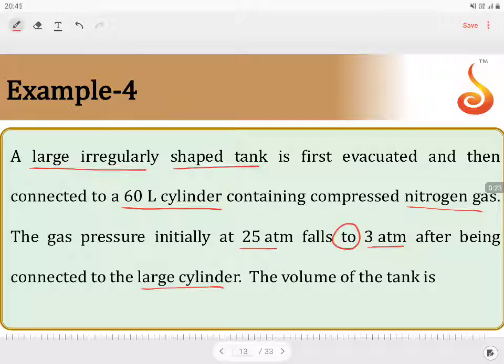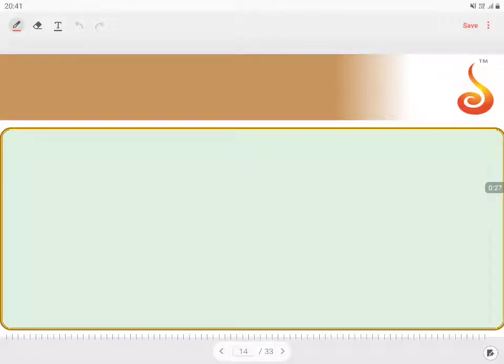So if we try to take the question in a better way, you have a tank which is an irregular shape - something like this, an irregular shaped tank which is of V liters. And you have a cylinder which is having 60 liters. This 60 liter cylinder is initially at 25 atmospheric pressure.